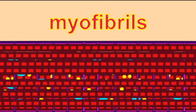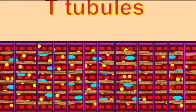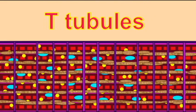Each one of these long tubes inside the cell is known as a myofibril. Connecting the myofibrils to the sarcolemma are T-tubules. Around the myofibrils there is modified ER, which contains calcium, known as the sarcoplasmic reticulum, or SR.